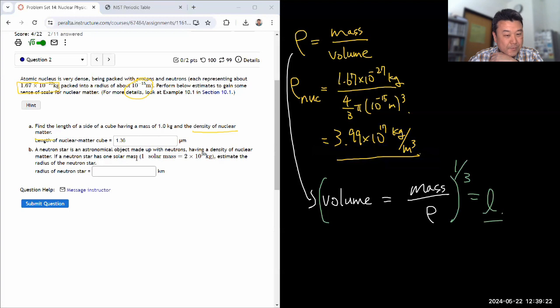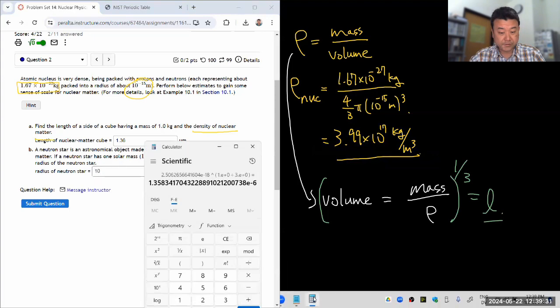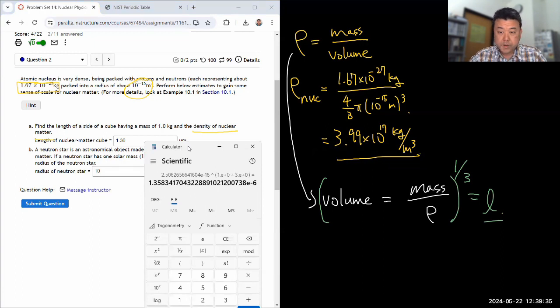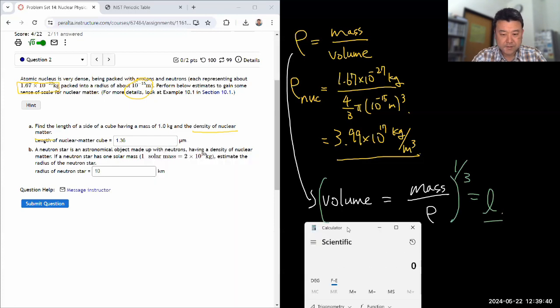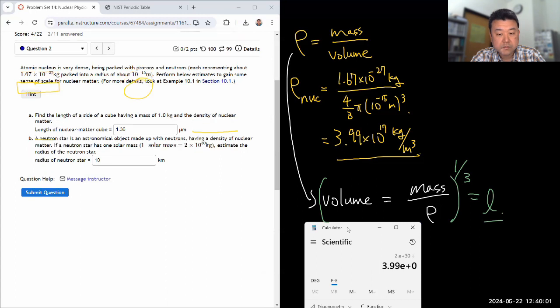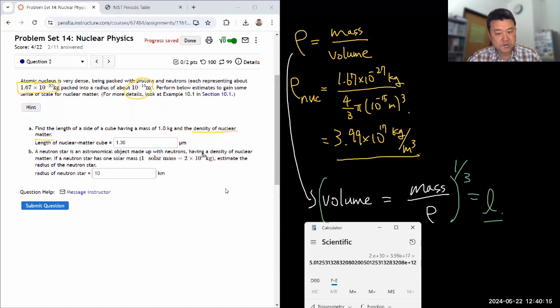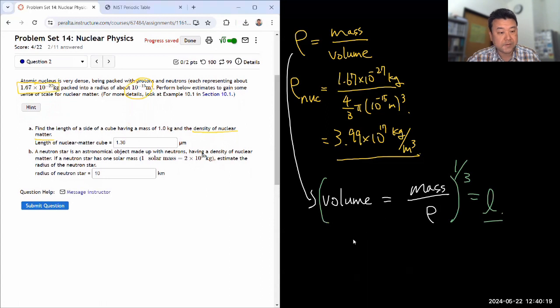A neutron star is an astronomical object made up of neutrons having a density of nuclear matter. Yeah, this density. If a neutron star had one solar mass, okay, we are given that estimate. I think I remember this. It's going to be something like 10 kilometers. But let's double check with the calculation. So we have amount of solar mass. I'll just type. I don't think I need to. So 2 times 10 to the power of 30. Divide by the nuclear density.